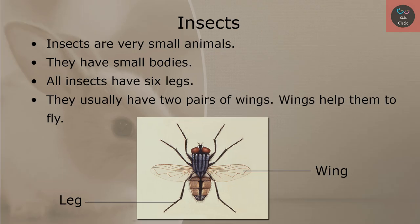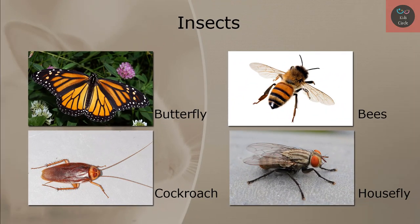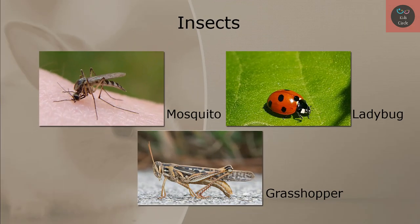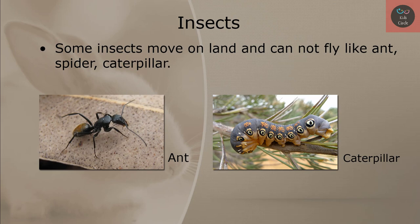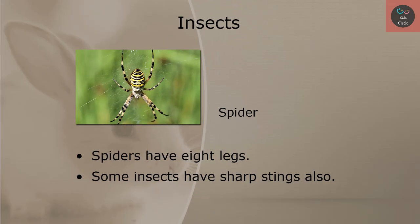Insects. Insects are very small animals. They have small bodies. All insects have six legs and they usually have two pairs of wings. Wings help them to fly. Butterfly, bees, cockroach, housefly, mosquito, ladybug, and grasshopper are some of the insects. Some insects move on land and cannot fly, like ant, spider, and caterpillar. Spiders have eight legs. Some insects have sharp stings also.